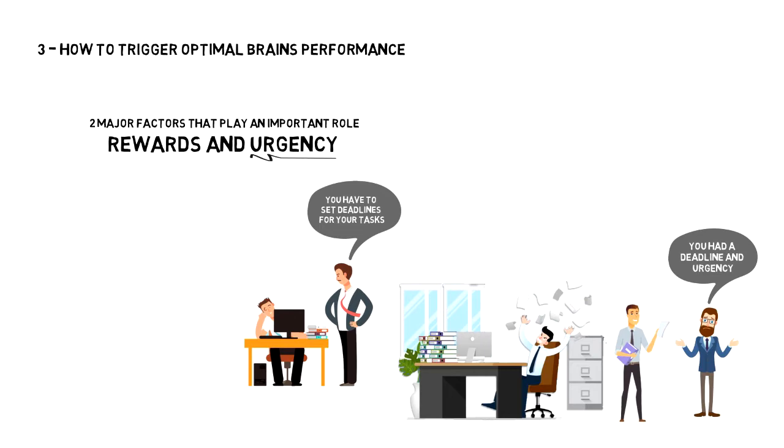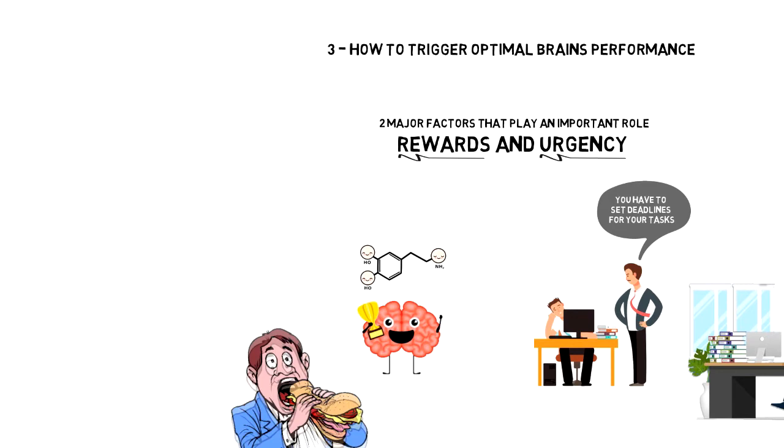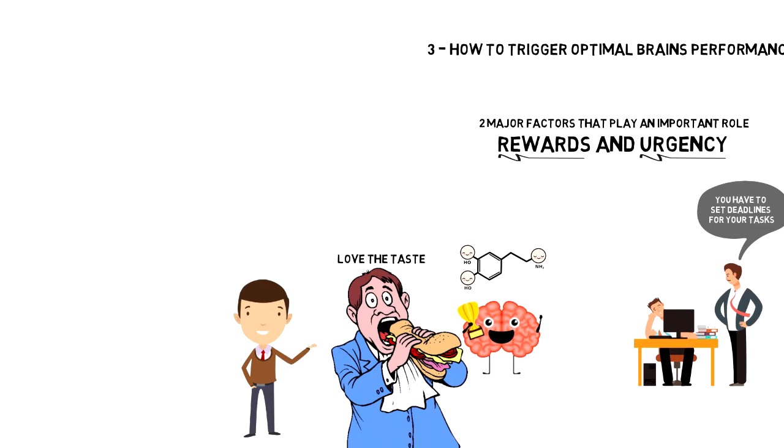Next is rewards. Reward is an interesting thing, especially for your brain. Your brain loves rewards because rewards are triggering dopamine, a hormone that is associated with pleasure. This is why it is so easy to fall prey to habits like eating unhealthy foods, simply because we love the taste of them. So you got to think about how you can attach rewards to the things that you want to achieve and that will trick your brain into working harder for you.